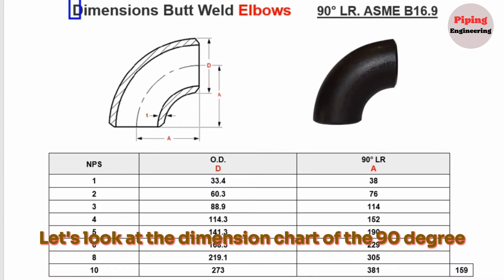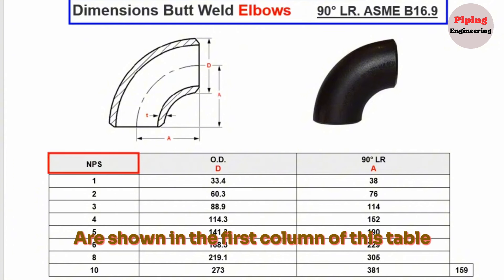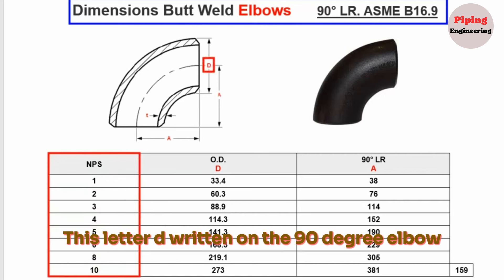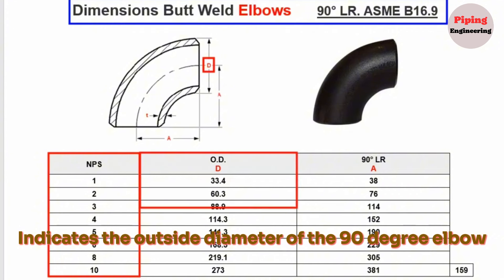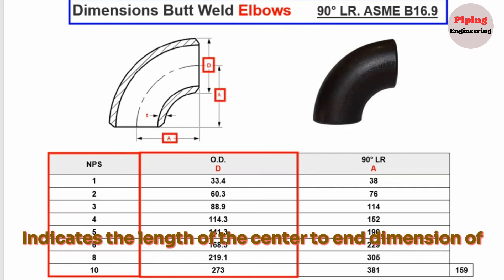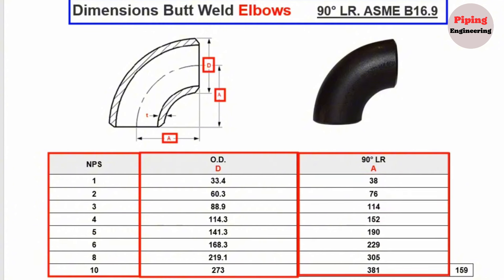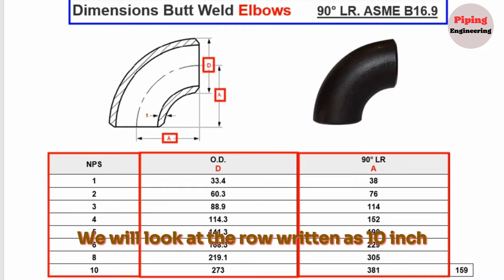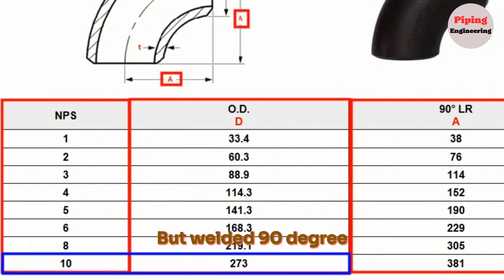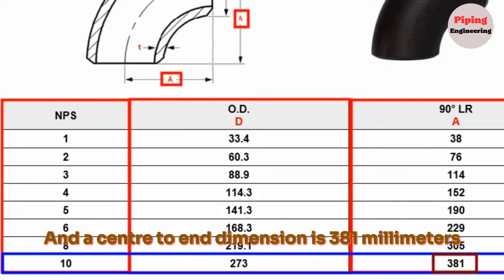First, let's look at the dimension chart of the 90-degree butt weld elbow. The nominal pipe sizes, NPS, of elbows are shown in the first column of this table. The letter D written on the 90-degree elbow indicates the outside diameter of the elbow, shown in this column. The letter A indicates the center-to-end dimension of the 90-degree elbow. Since the pipeline is 10-inch, we look at the 10-inch row. This table shows that a 10-inch butt welded 90-degree elbow has an outside diameter of 273 mm and a center-to-end dimension of 381 mm.